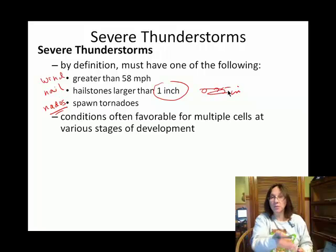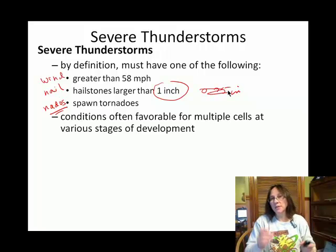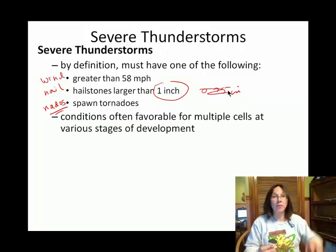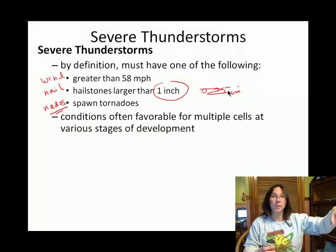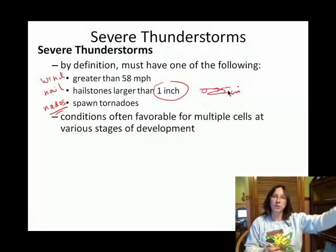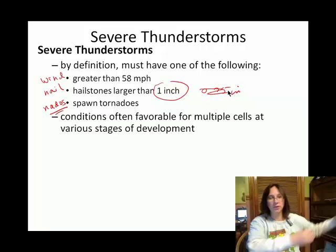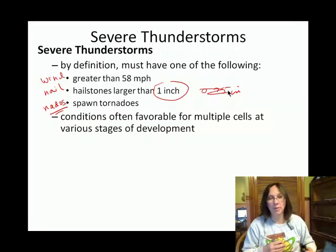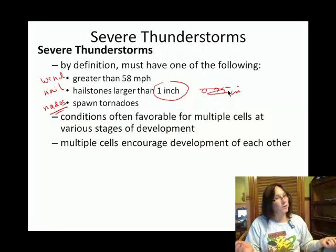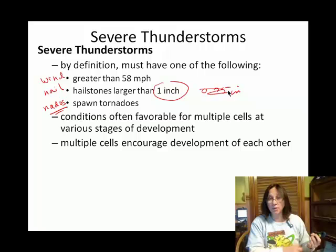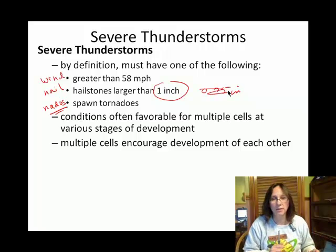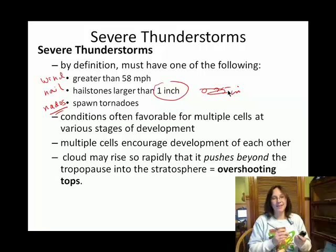Air mass thunderstorms don't usually produce severe weather. Severe weather often comes when you have multiple cells at work. We're going to talk about two types of systems with multiple thunderstorms: squall lines and mesoscale convective complexes. Those thunderstorm cells can produce wind, hail, or tornadoes — they kind of egg each other on.